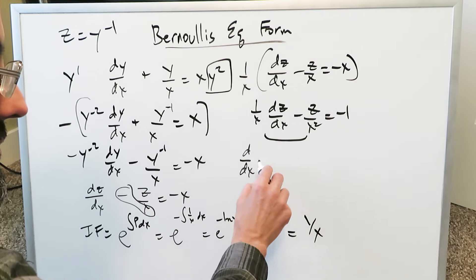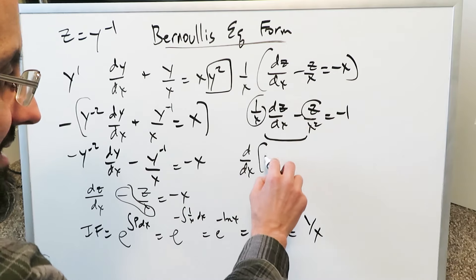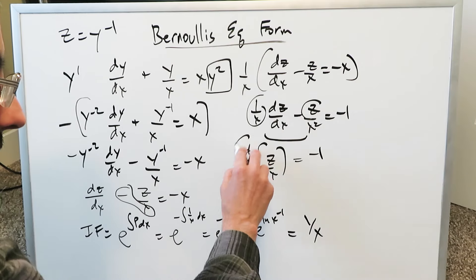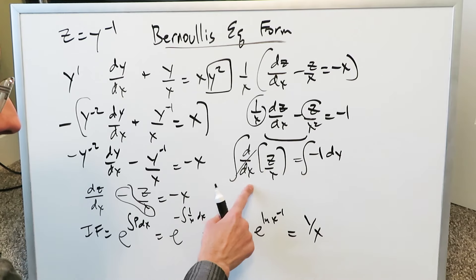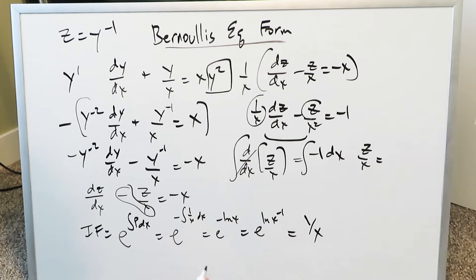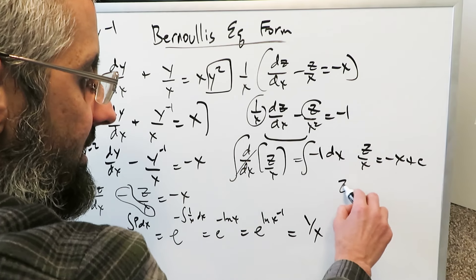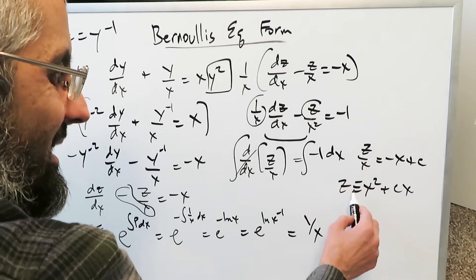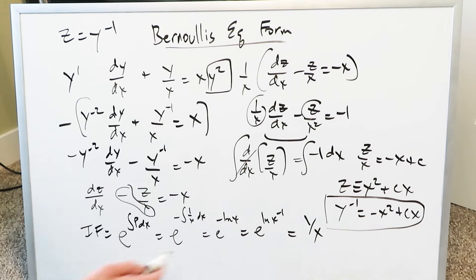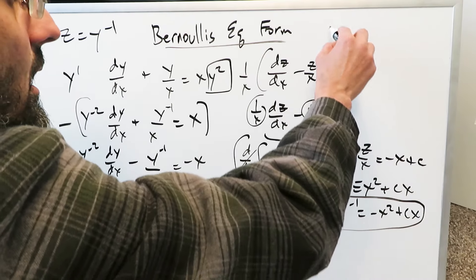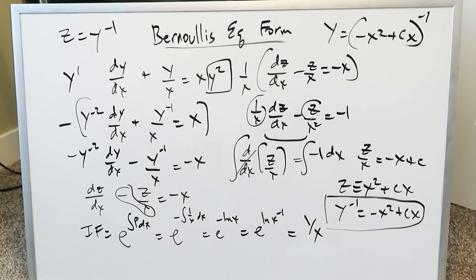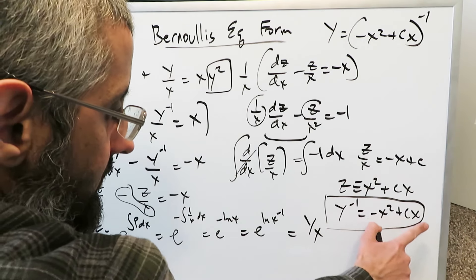This comes from the product rule applied to z over x. Bringing in the integral forms, the derivative and integral cancel each other out, so you have z over x equals the antiderivative of minus 1 dx, which is minus x plus c. Therefore z equals minus x squared plus cx. But z all along equals y to the minus 1, so y to the minus 1 equals minus x squared plus cx. You can stop here, or write 1 over y equals minus x squared plus cx, or equivalently y equals 1 over the quantity minus x squared plus cx. All of these are valid answer forms.